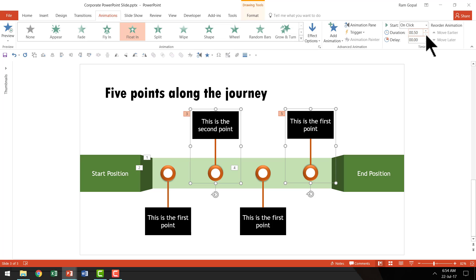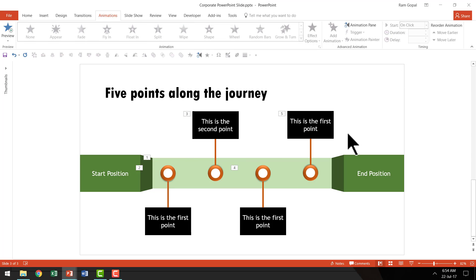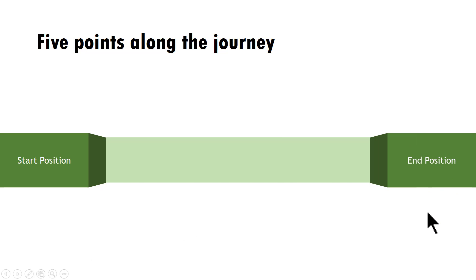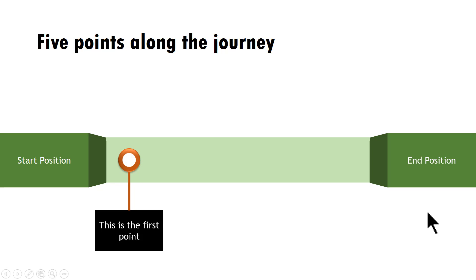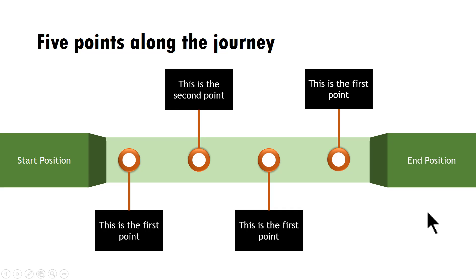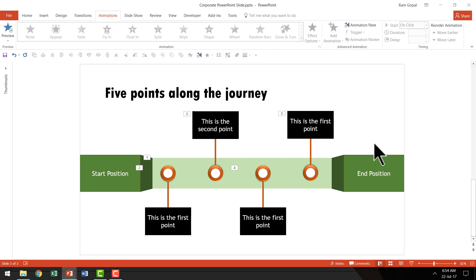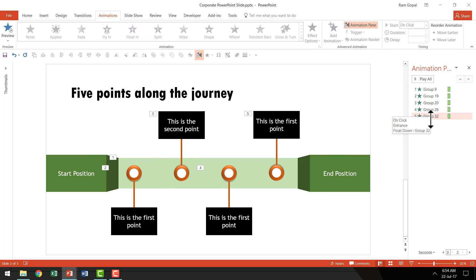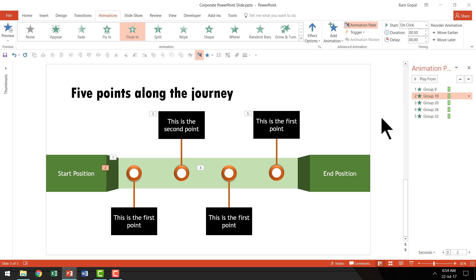Now we are done. Let us go to Slideshow mode and see how everything operates. The base remains on the slide, then the end position wipes in, then on each click we get the first point, second point, third, and fourth. That is how you build this beautiful corporate PowerPoint slide. If at any point you want to change any animation, go to the Animation Pane to see all animation events on the right side and click any specific event to change it.